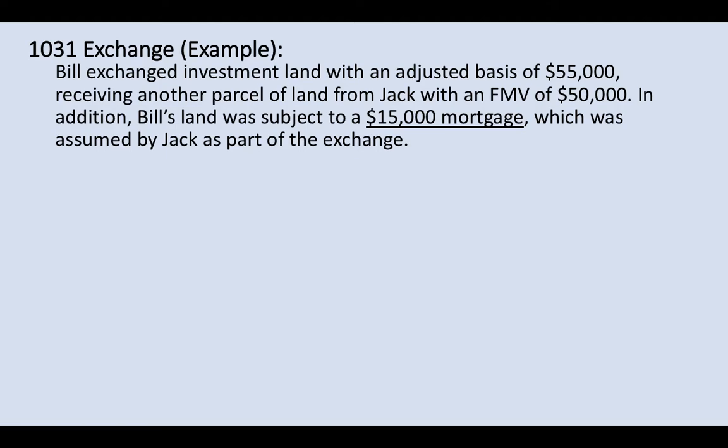In the second example, Bill exchanges investment land with an adjusted basis of $55,000, receiving another parcel from Jack with a fair market value of $50,000. In addition, Bill's land was subject to a $15,000 mortgage which was assumed by Jack as part of the exchange.